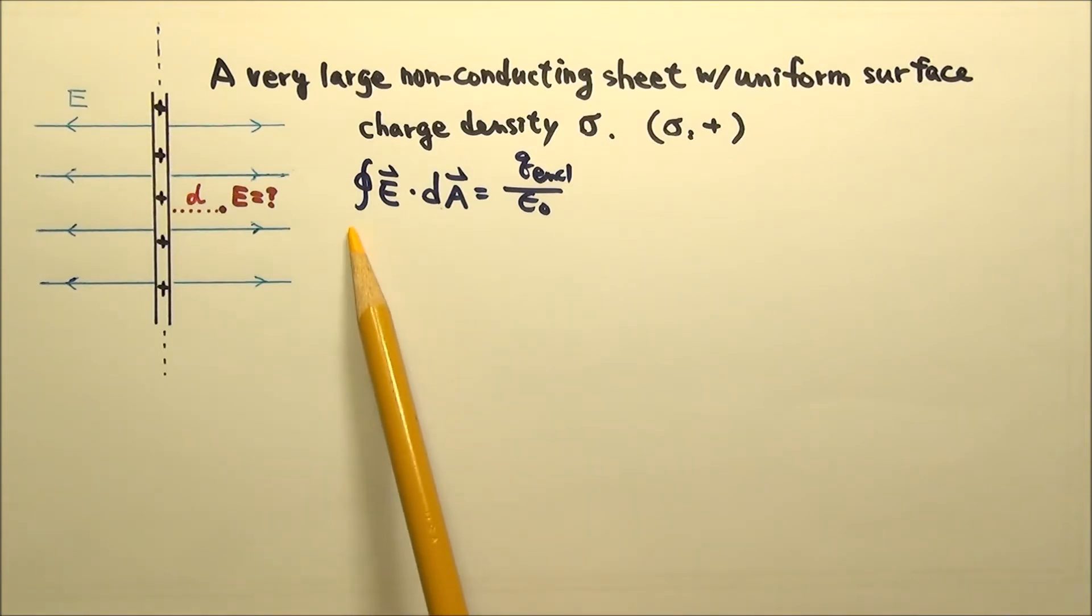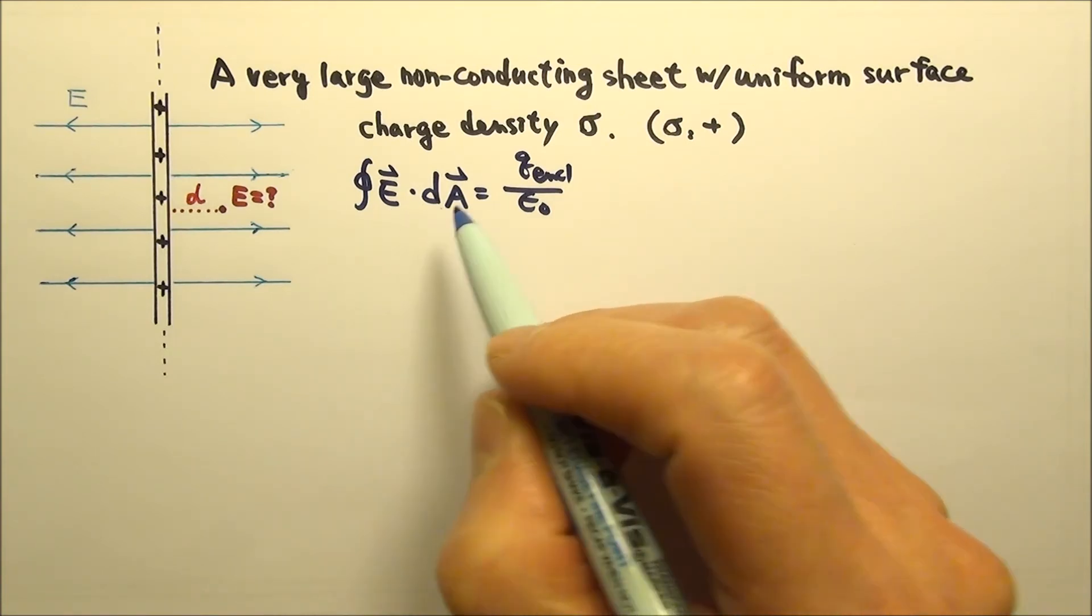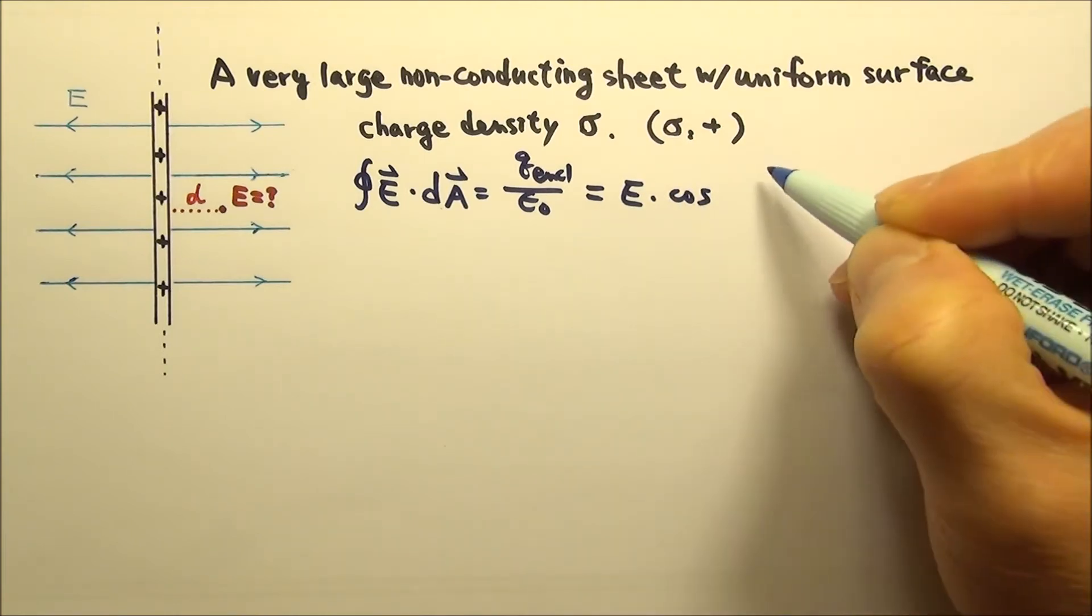When we use Gauss's law to find the electric field, we need to make a Gaussian surface that goes through the point we are interested in. And we need the E and the cosine of the dot product to be constant, so we can take them out of the integral.